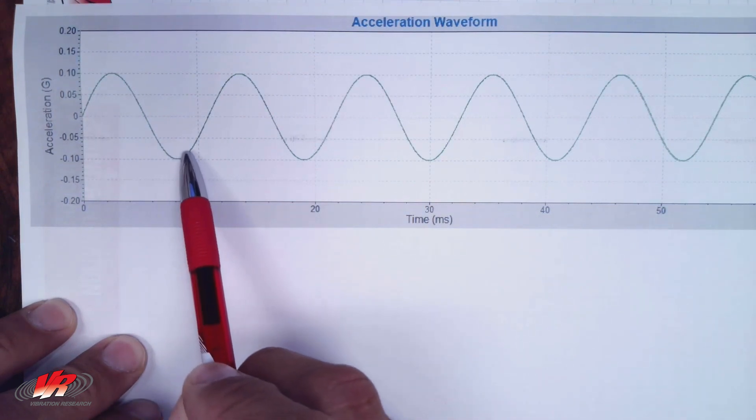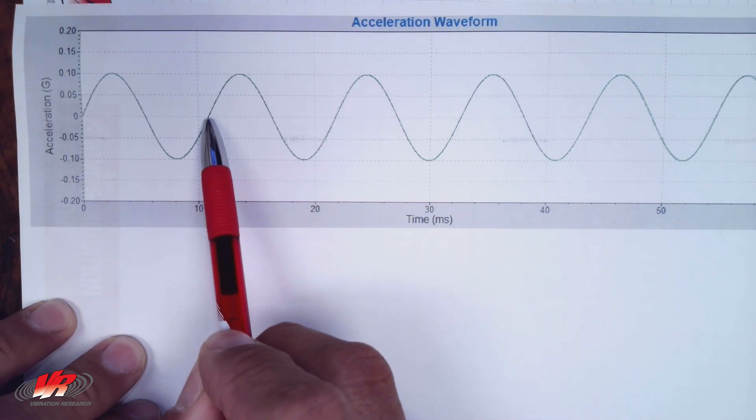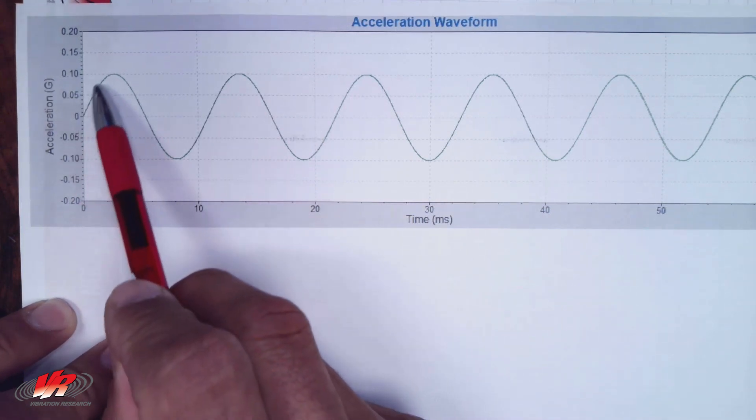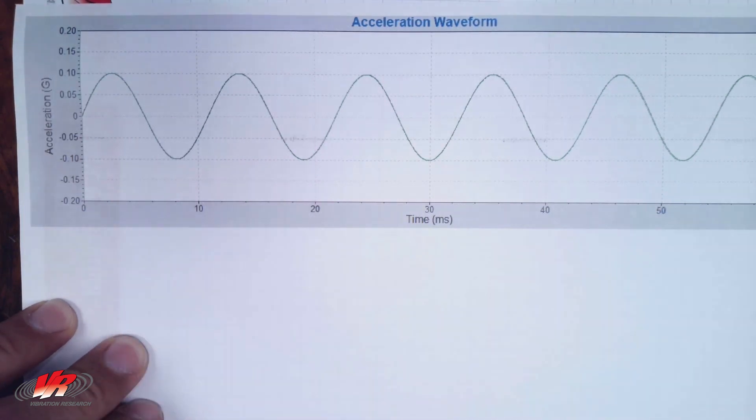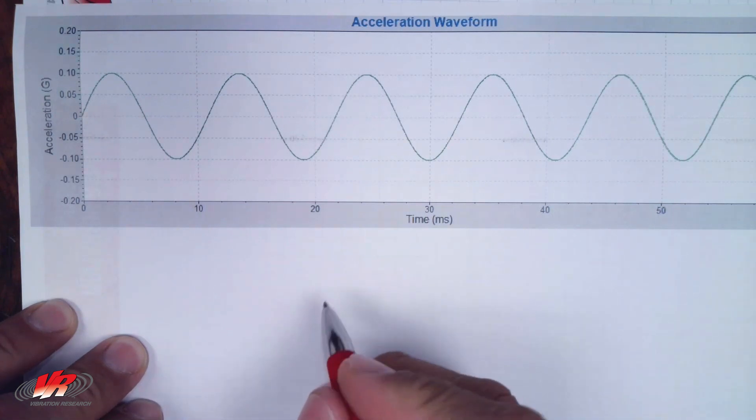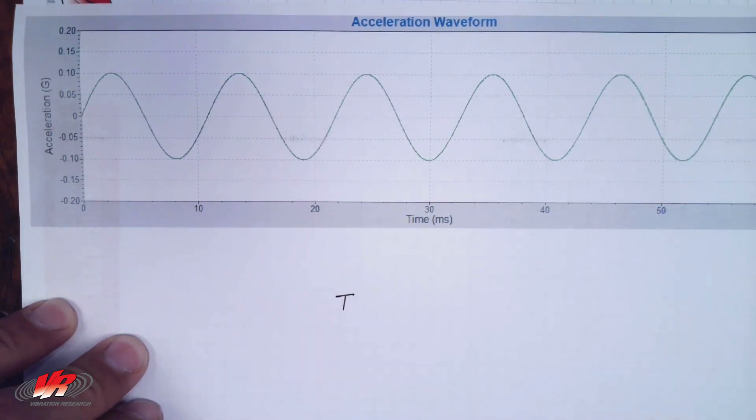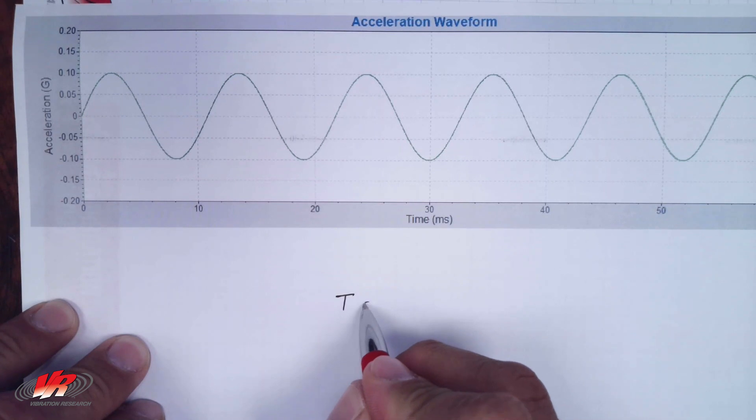And then return again to its original location. That would be considered one oscillation or one cycle, and the time to accomplish that is called the period, represented by letter T. The period is generally measured in units of seconds.